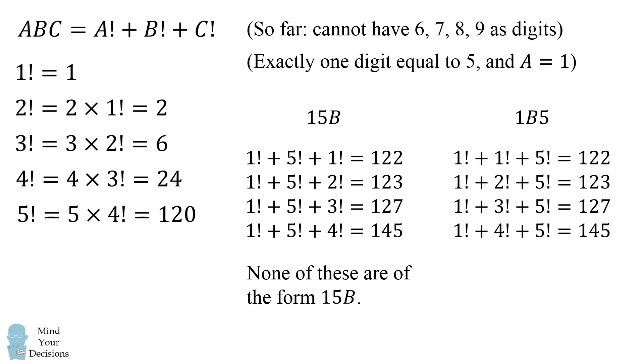But these exact sums could be of the form 1B5, and in fact the very last equation, 1 factorial plus 4 factorial plus 5 factorial produces the result of 145 and this exactly works.